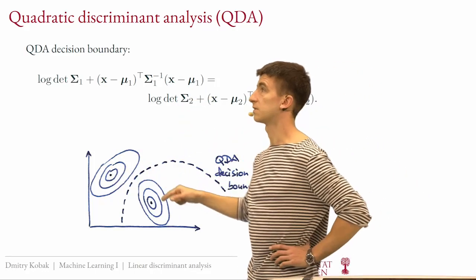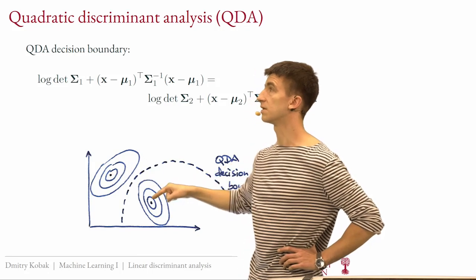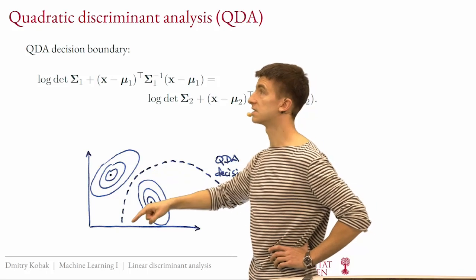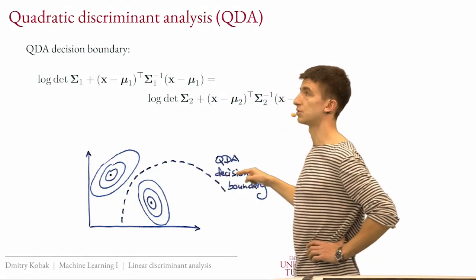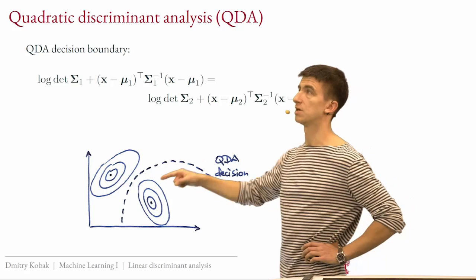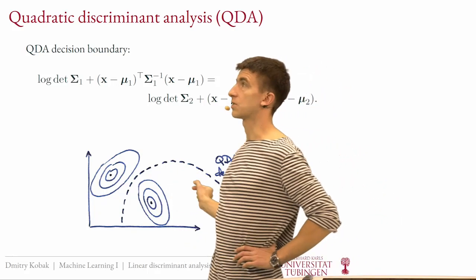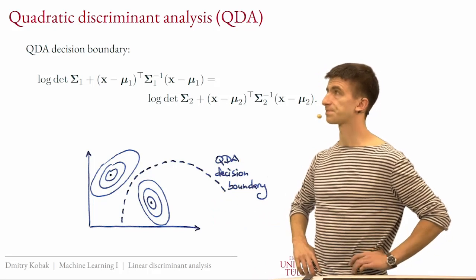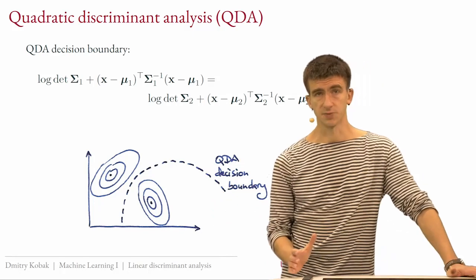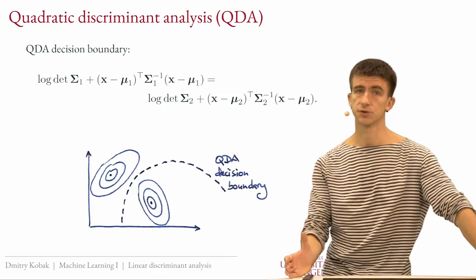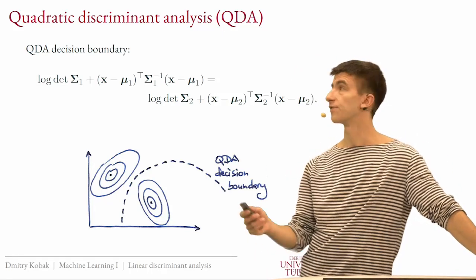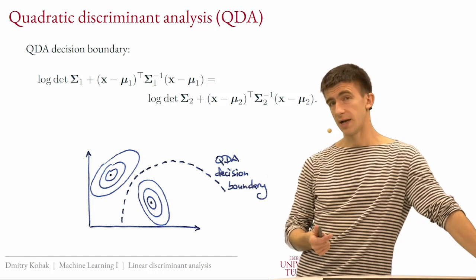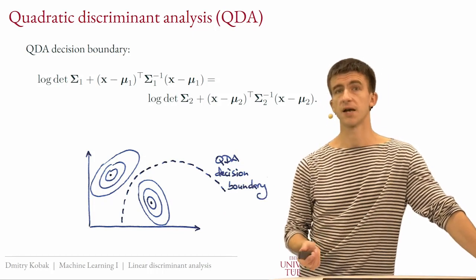So in QDA, with different means and different covariance matrices per class, the decision boundary is a quadratic function — some parabola or circle in two dimensions. This is not linear discriminant analysis. QDA is actually rare in my experience — it's not used that often in practice.